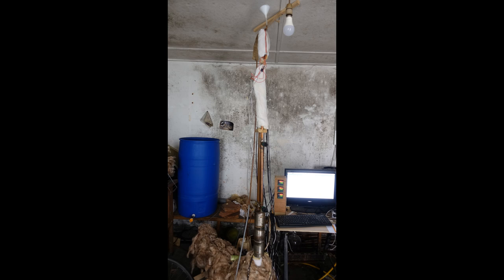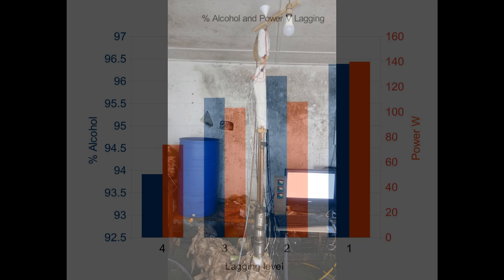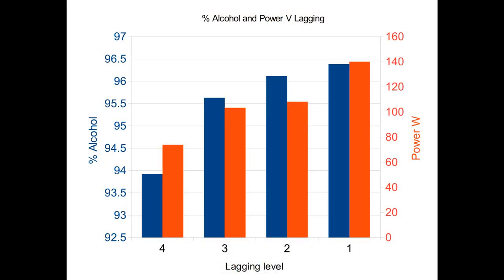Here are the results showing the power consumption that the feedback system settled on and the alcohol concentration of the resulting product. We can see that at every stage adding insulation reduces power consumption and it also reduces product proof. And similarly, removing insulation increases power consumption but increases product proof.